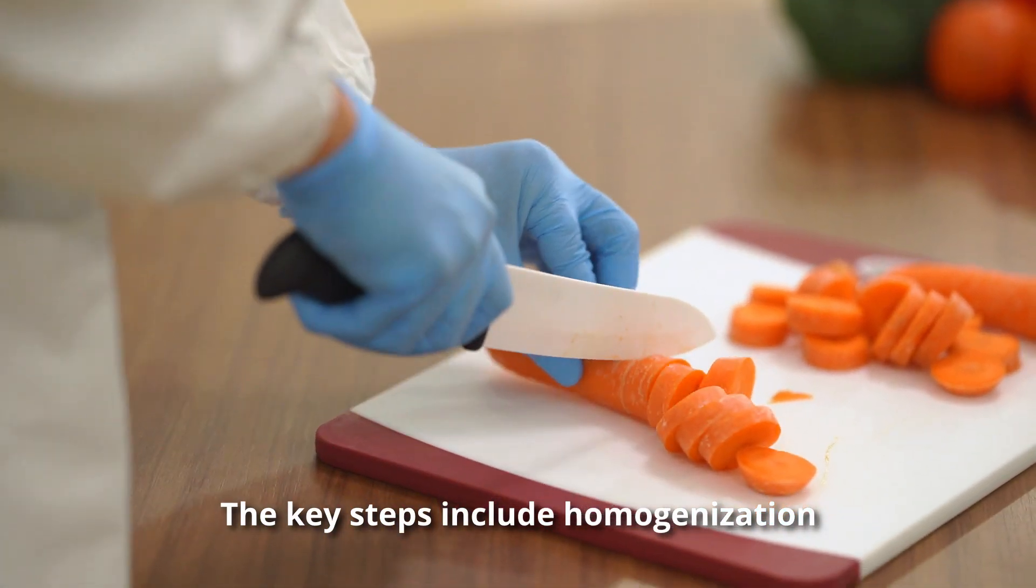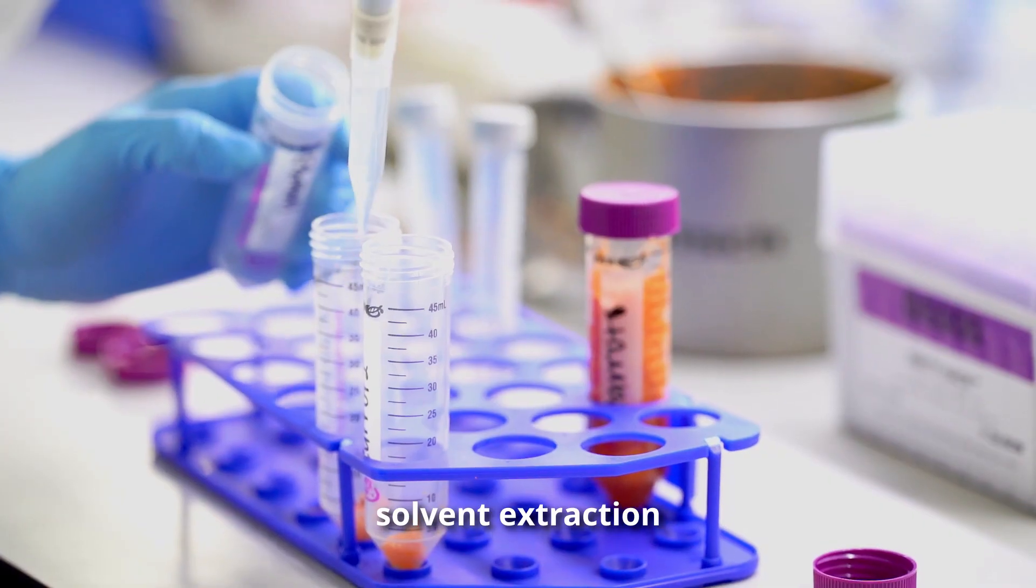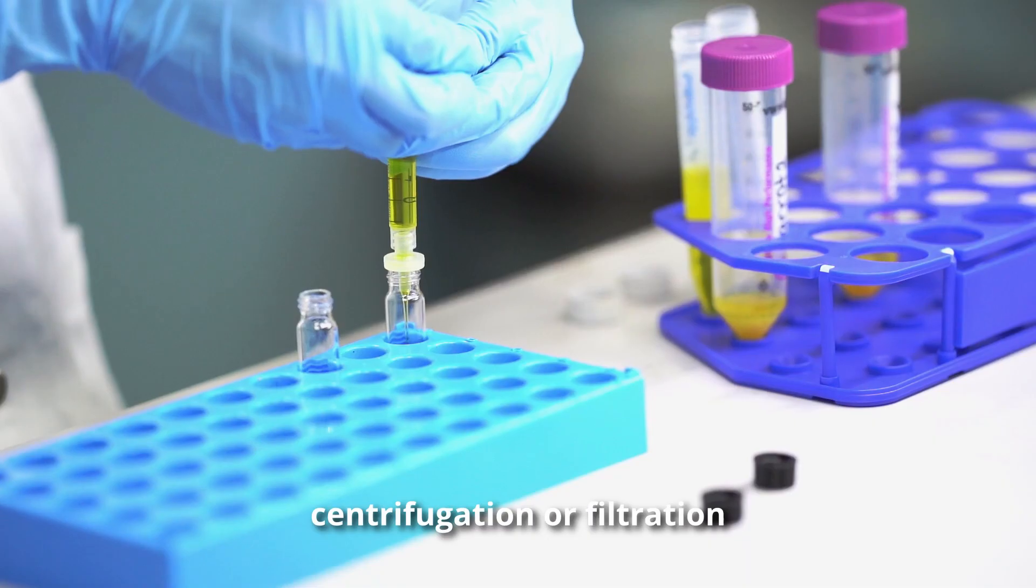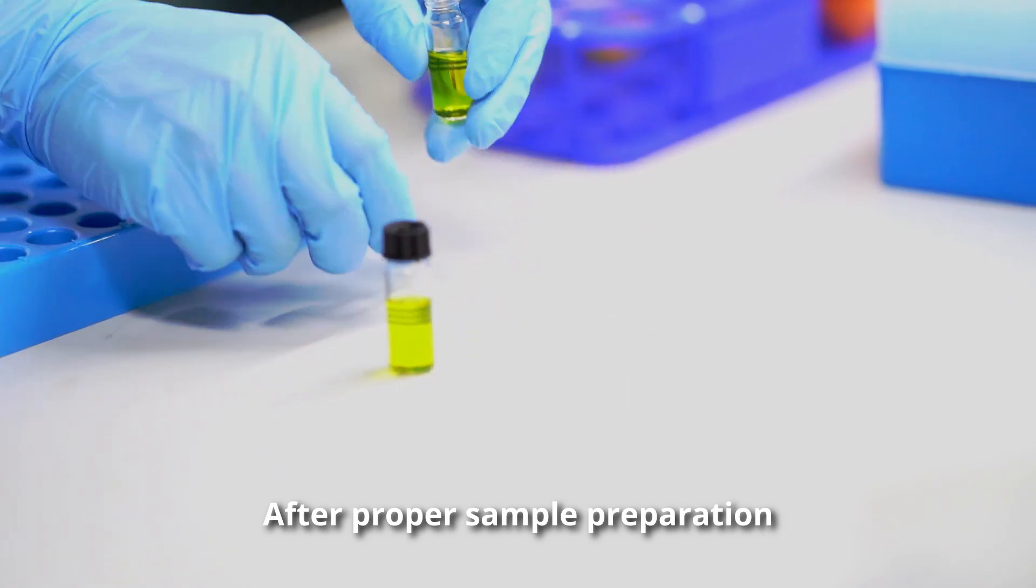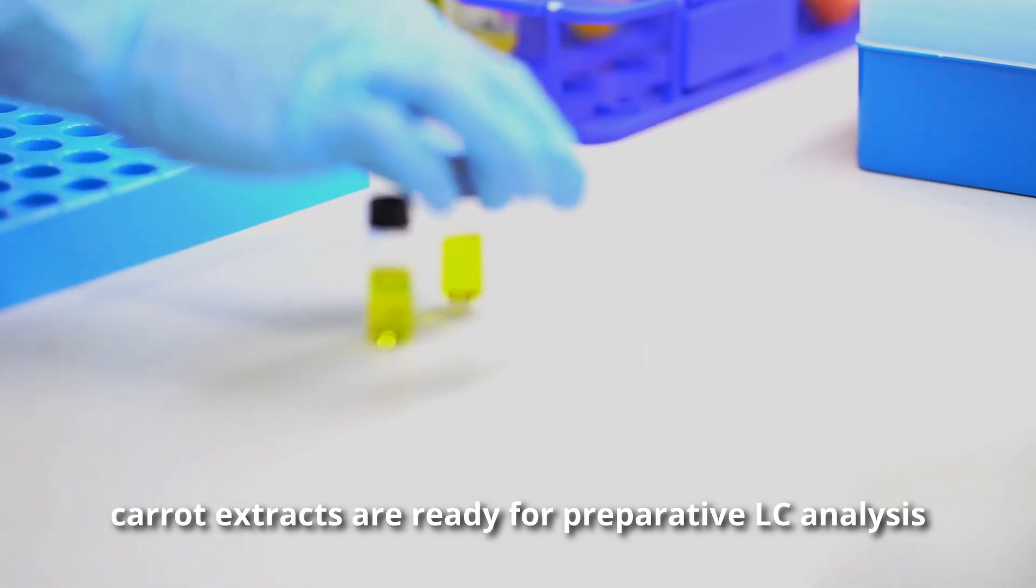The key steps include homogenization, solvent extraction, centrifugation, or filtration. After proper sample preparation, carotene extracts are ready for Preparative LC Analysis.